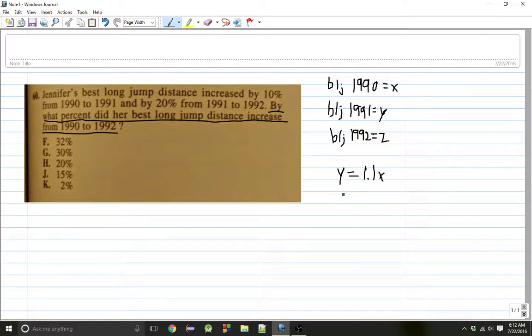Okay, and then the value in 1992 is Z, and we know that it increased by 20% between 1991 and 1992. So Z equals 120% of Y, or 1.2 of Y.